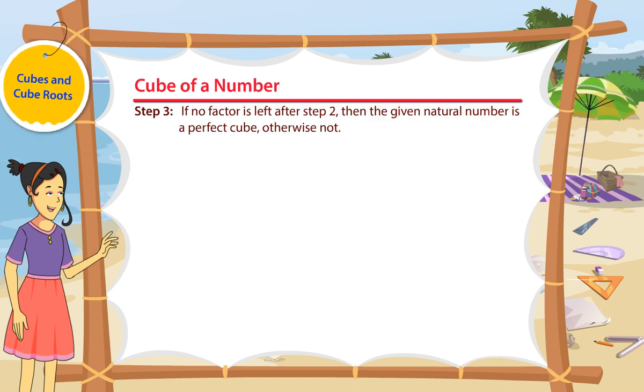Step 3: If no factor is left after step 2, then the given natural number is a perfect cube, otherwise not.